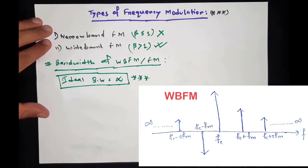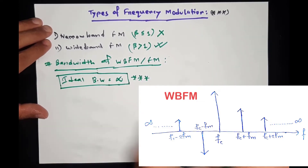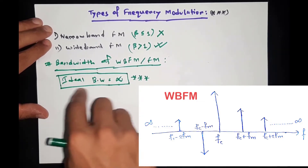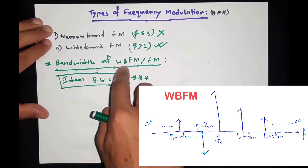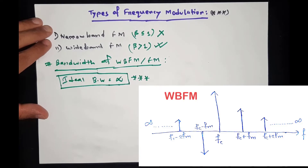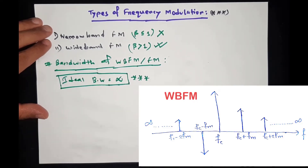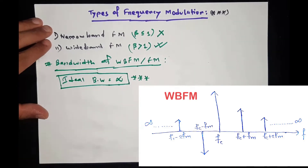In wide band FM, we have the double sideband full carrier (DSB-FC) with the carrier and upper sideband. These are the ideal case components. The carrier is the upper sideband, and the actual sideband is the upper sideband. Similarly, the negative component is the actual lower sideband. This means the bandwidth extends to infinity.